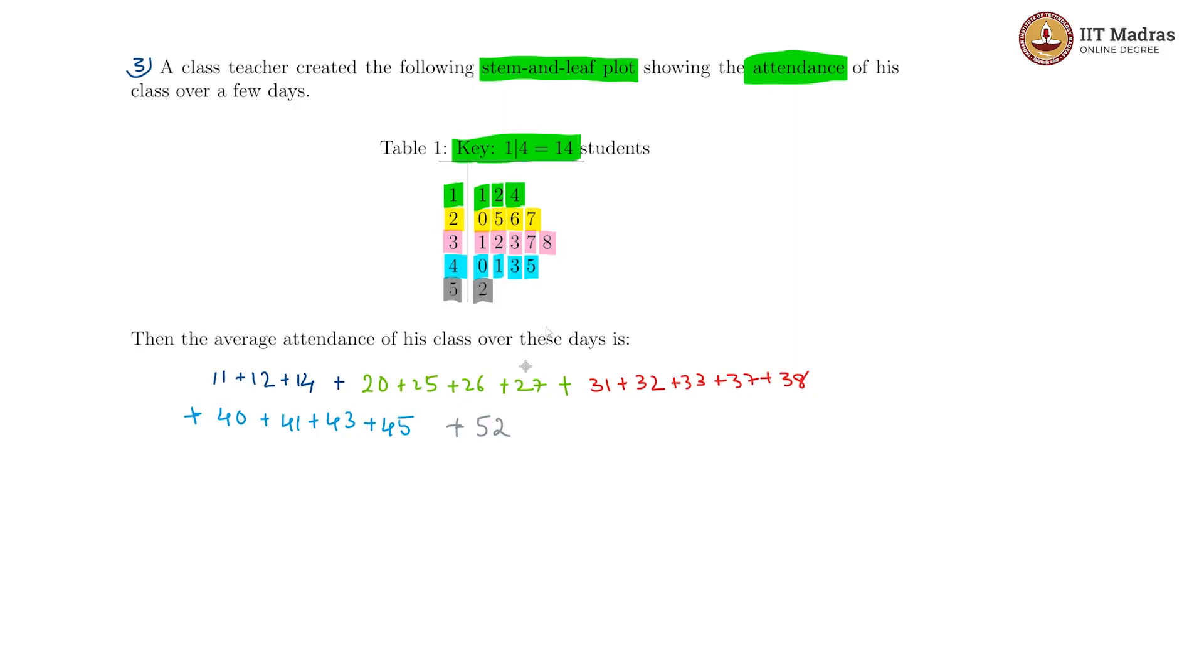The total sum of this, we will have to calculate, and that is going to be 11 plus 12 is 23, 23 plus 14 is 37, plus 20 is 57, plus 25 is 82, plus 26 is 108, plus 27 is 135, plus 31 is 167, plus 32 is 198, plus 33 is 231.